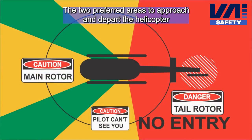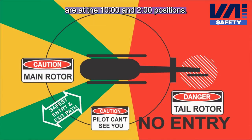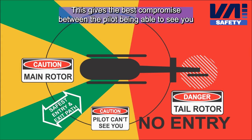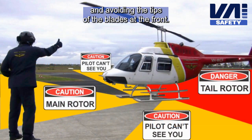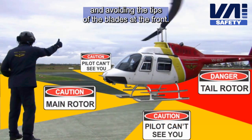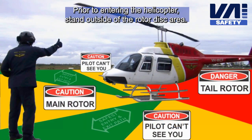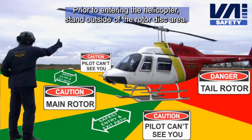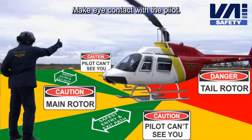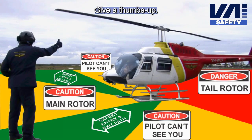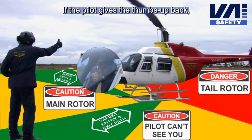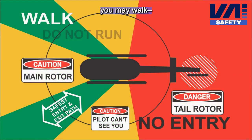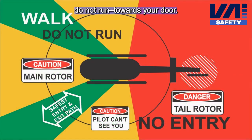The two preferred areas to approach and depart the helicopter are at the ten o'clock and two o'clock positions. This gives the best compromise between the pilot being able to see you and avoiding the tips of the blades at the front. Prior to entering the helicopter, stand outside of the rotor disc area, make eye contact with the pilot, and give a thumbs up. If the pilot gives the thumbs up back, you may walk — do not run — towards your door.